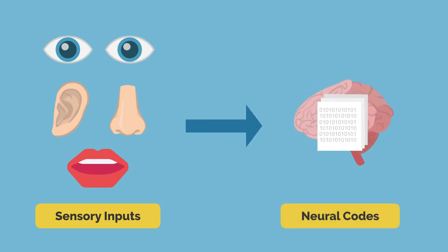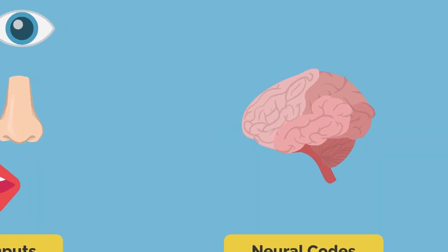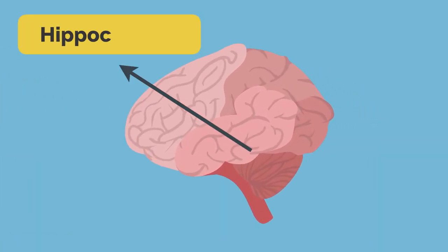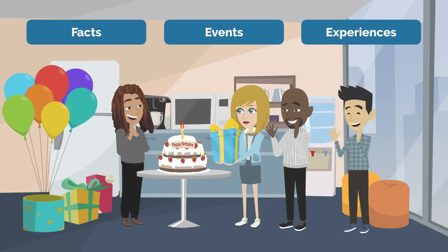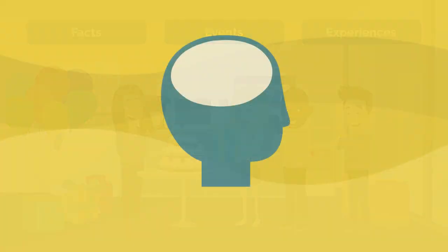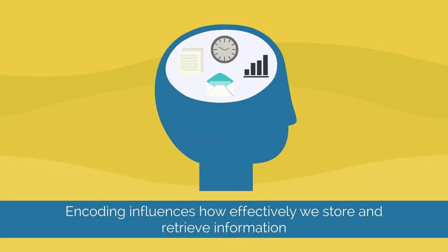These codes can be stored in our long-term memory. Encoding happens in many areas of the brain, including the hippocampus. The hippocampus plays a crucial role in encoding information such as facts, events, and experiences. How we encode influences how effectively information is stored and retrieved from our long-term memory.